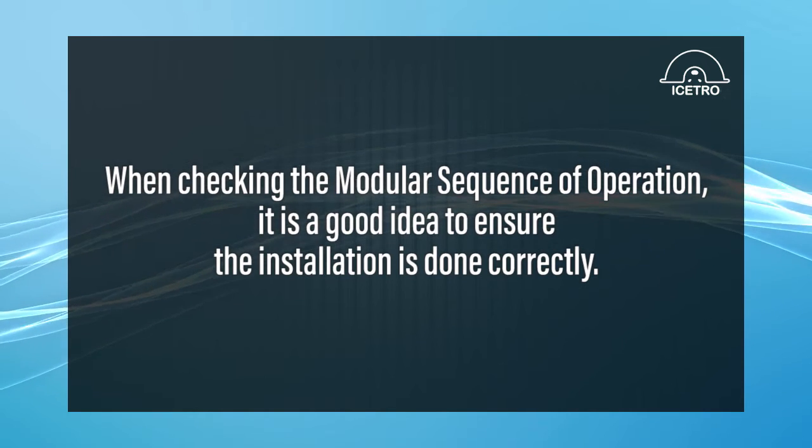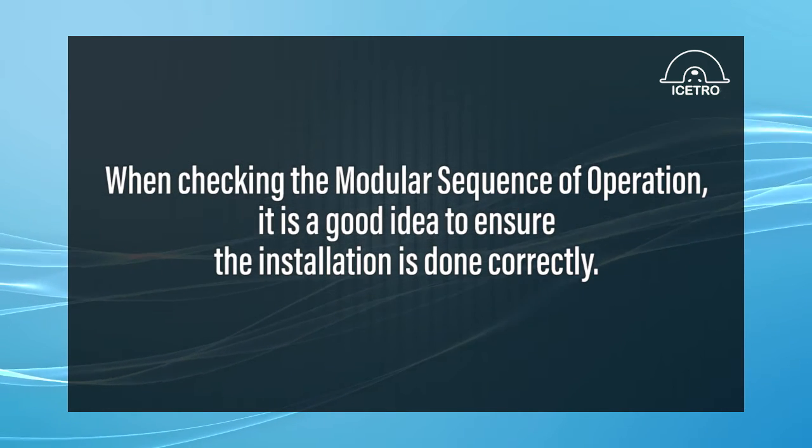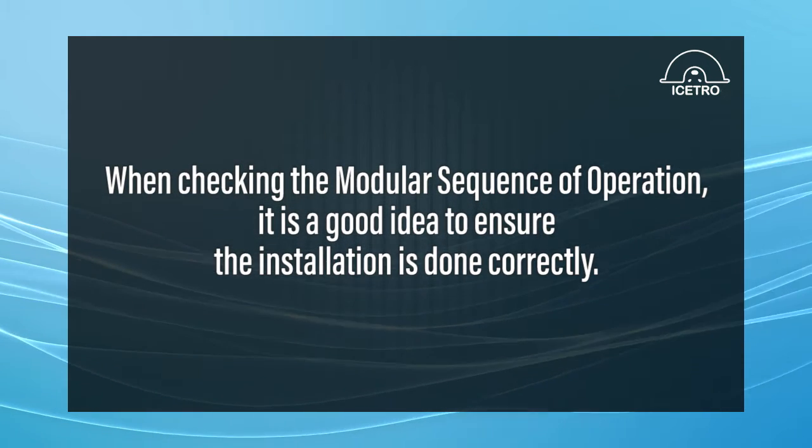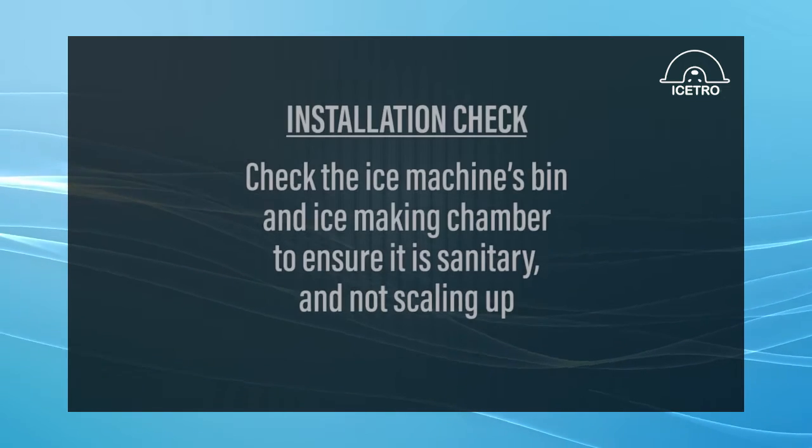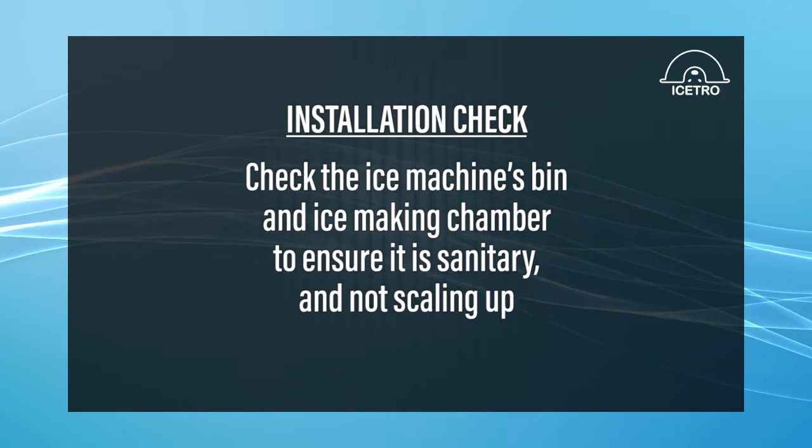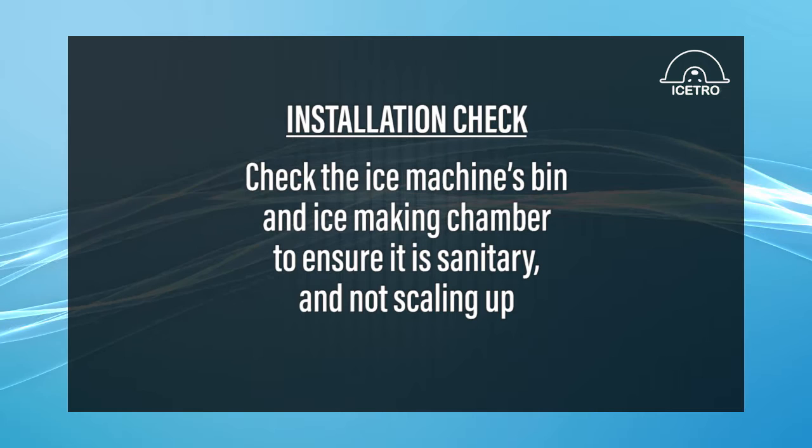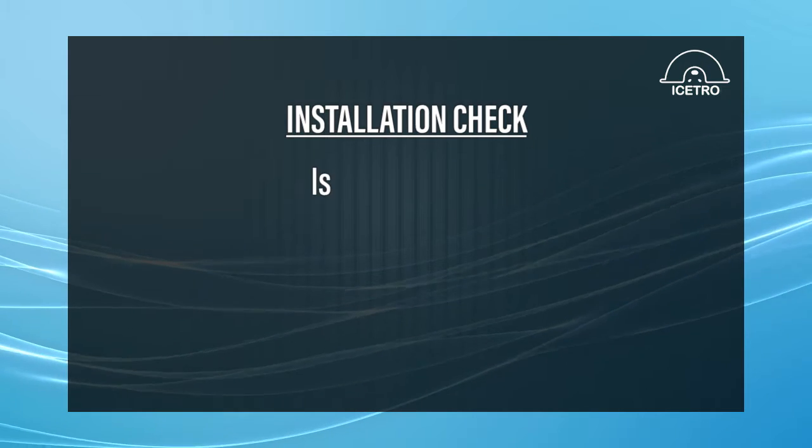When checking the modular sequence of operation, it is a good idea to ensure the installation is done correctly. Always check the ice machine's bin and ice making chamber to ensure it is sanitary and not scaling up. Is the unit level?